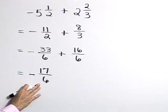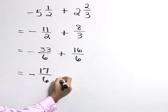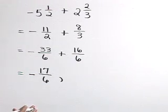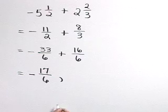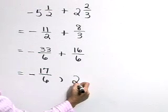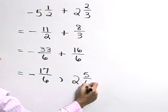Now this is reduced form, but you can also write this result in mixed number form, because 6 goes into 17 two times, with 5 left over. So we can also write that result as a negative 2 and 5 sixths.